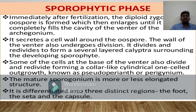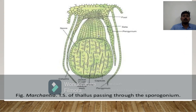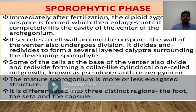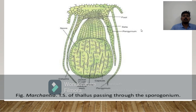Some cells at the base of the venter also divide and re-divide, forming a collar-like cylindrical one-cell outgrowth known as pseudoperianth or perigynium. The mature sporogonium is a more or less elongated structure differentiated into three distinct regions: foot, seta, and capsule. This is the sporophyte of Marchantia — we can find three distinct structures: foot, seta, and capsule.